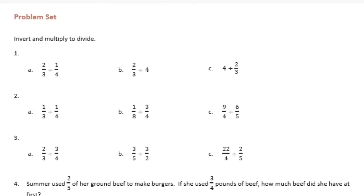So 2 thirds divided by 1 fourth. I'm going to take 1 fourth and invert it. We invert the divisor — always the divisor — and multiply. So 1 fourth, if I invert that, I'll have 4 over 1, which gets me 8 thirds.